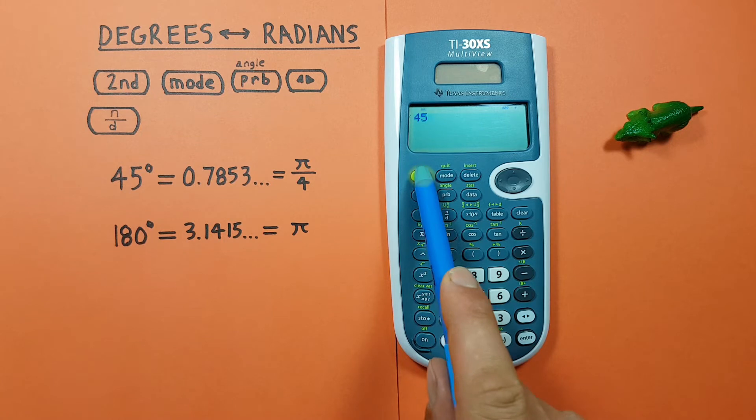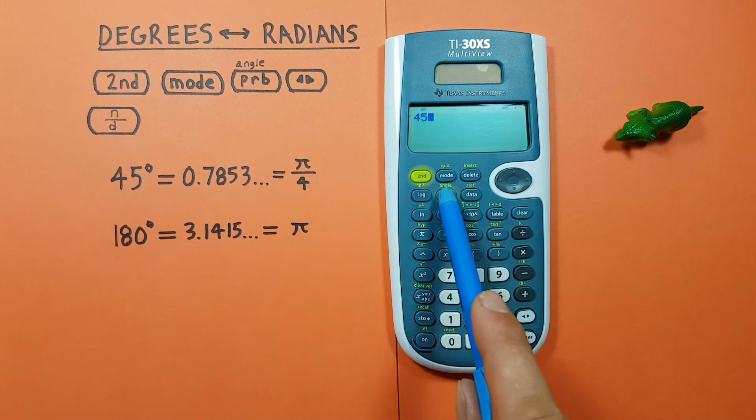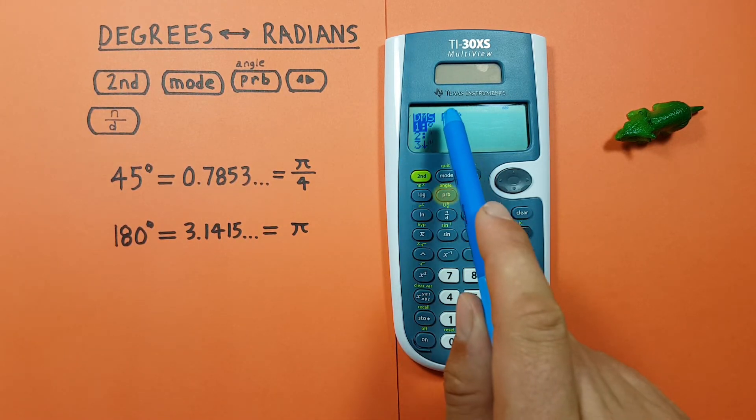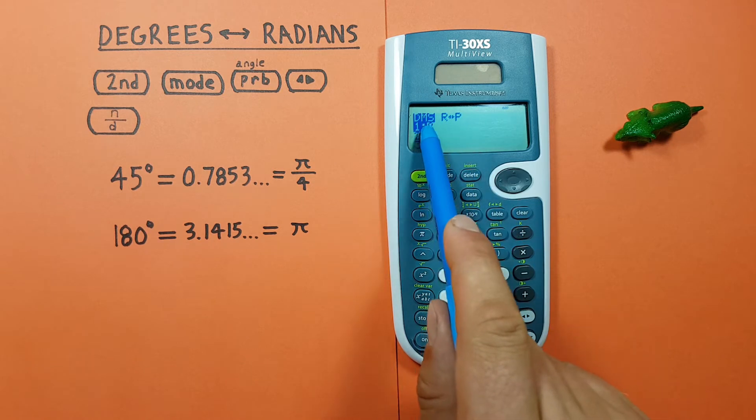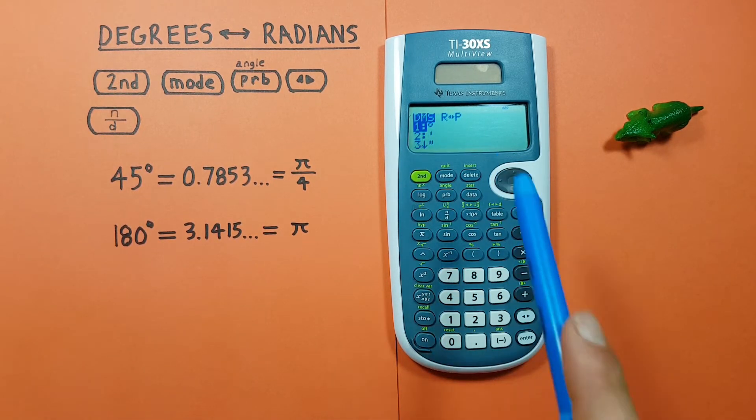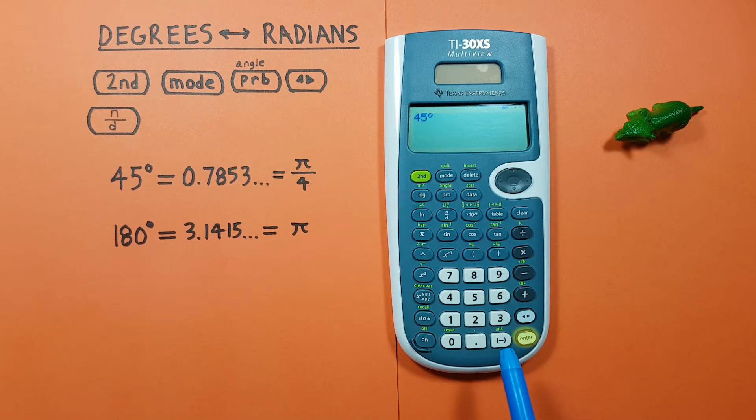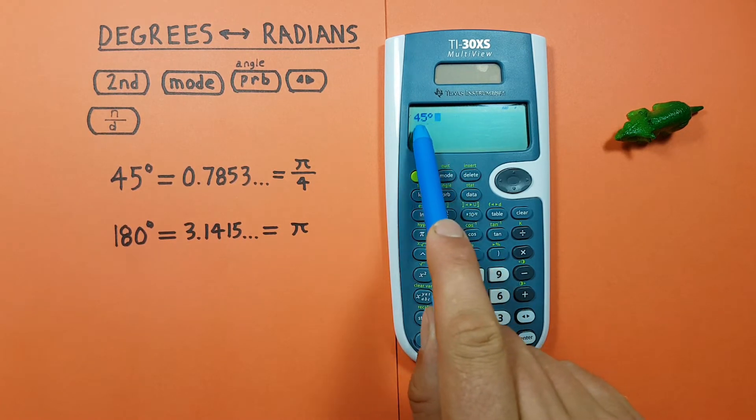To do that we press second, and then the PRB key, which will bring us to this menu here. The first option is the degree symbol, and that's the one we want because we're using degrees. So we press enter. Now we see 45 degrees on our screen.